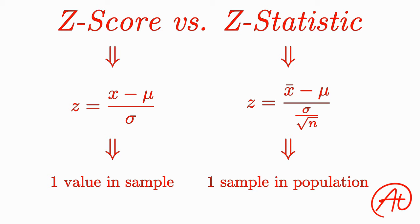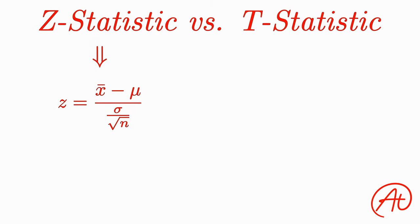So now that we covered the difference between a z-score and a z-statistic, we can get to the juicy stuff: the difference between z-statistics and t-statistics. In order to use this z-equation, we need a few values. We need the sample mean x-bar, the population mean mu.